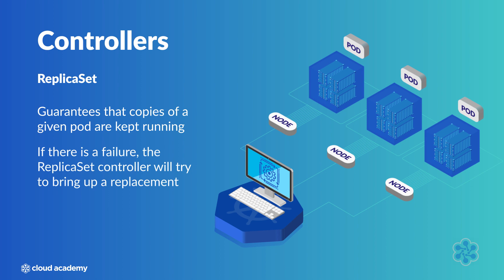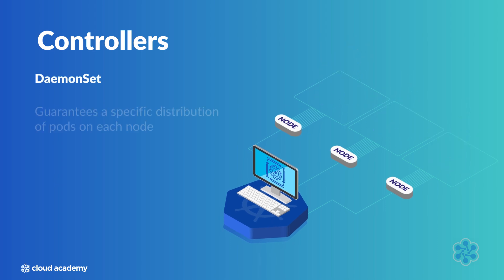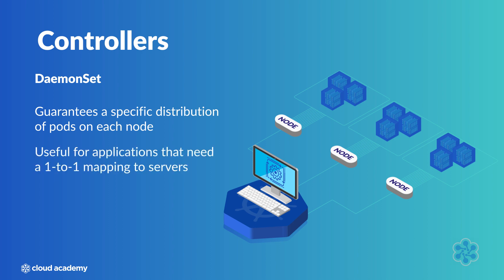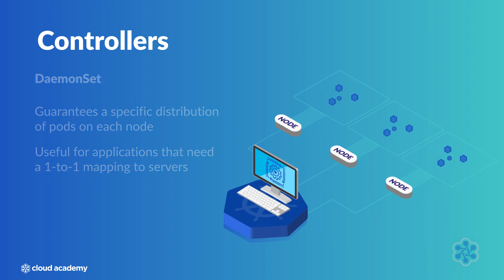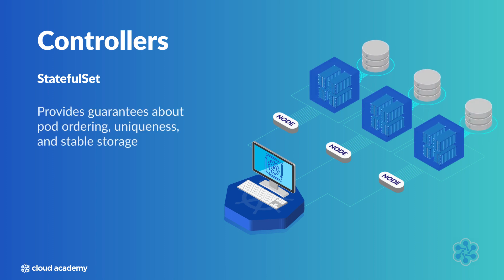There are other controller types for different purposes. There is the daemon set controller, which is meant to guarantee a specific distribution of pods on each node. This controller is useful for hardware monitoring and logging applications that need a one-to-one mapping to servers. There's also the stateful set controller, designed for stateful applications. This controller provides guarantees about pod ordering, uniqueness, and stable storage.